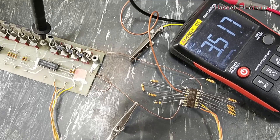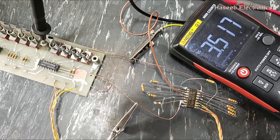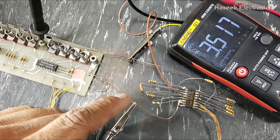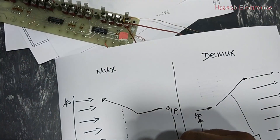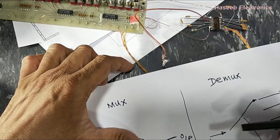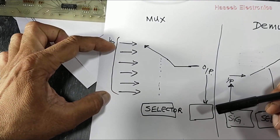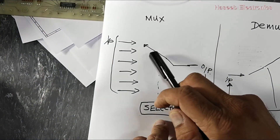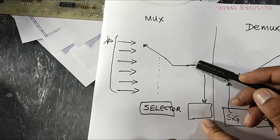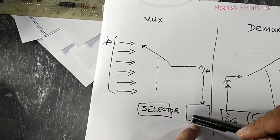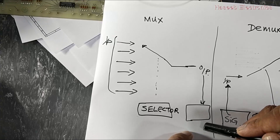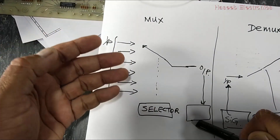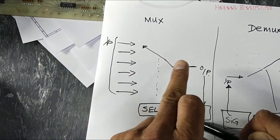Welcome back to the channel. In this video we will discuss the CD4051, a CMOS 8-channel analog multiplexer demultiplexer. We will discuss in detail how this IC works. First, what is a multiplexer and demultiplexer, since this IC can do both jobs. A multiplexer is when we have many channels and many inputs, and our device can select any one input and provide it to a single output for further processing by a microcontroller or computer.